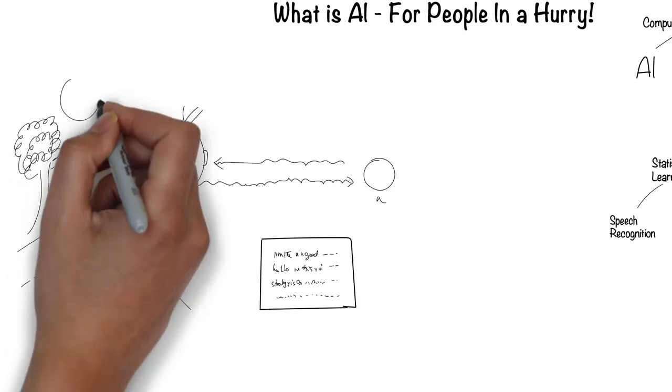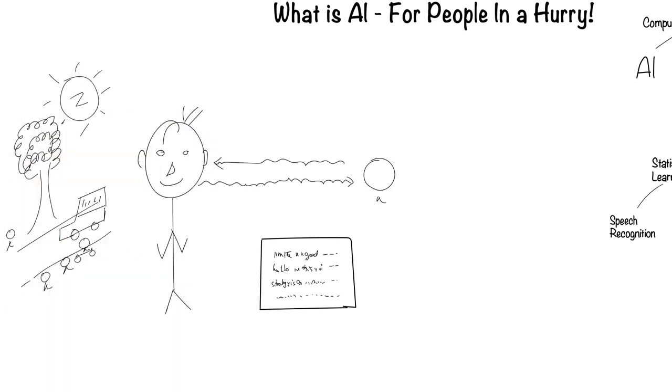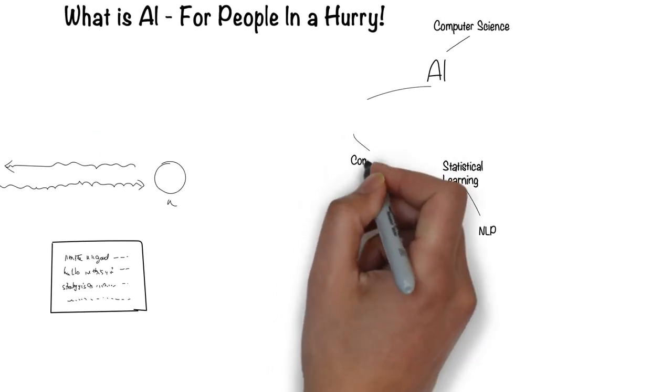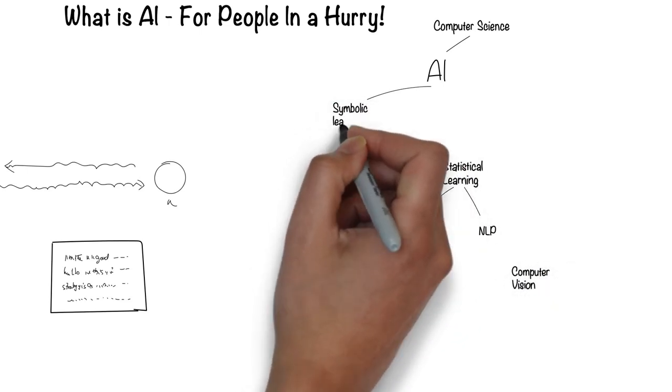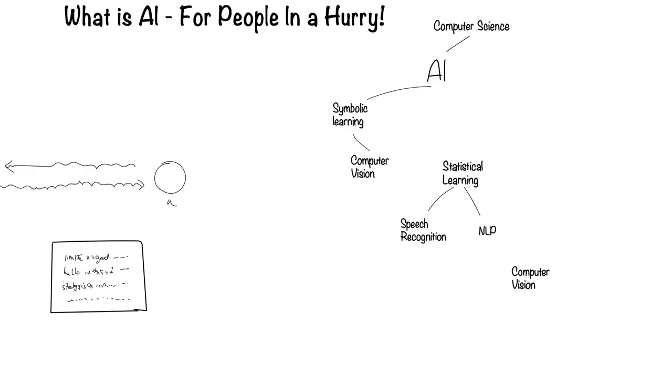Humans can see with their eyes and process what they see. This is the field of computer vision. Computer vision falls under the symbolic way for computers to process information.